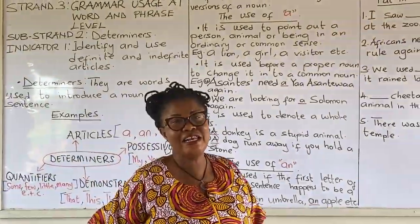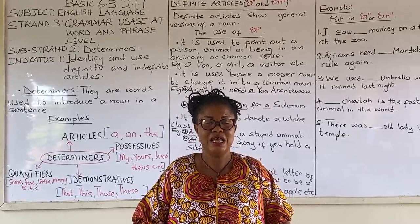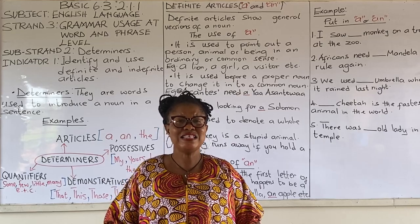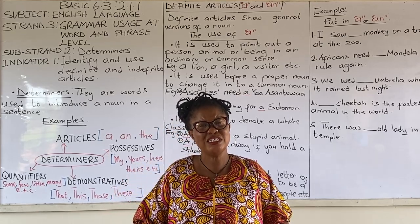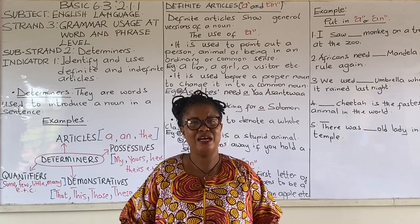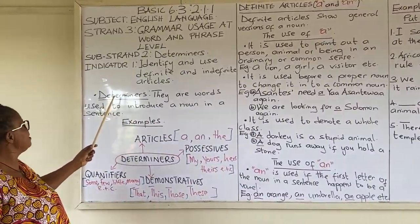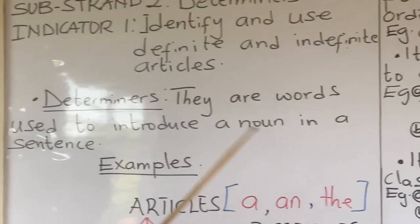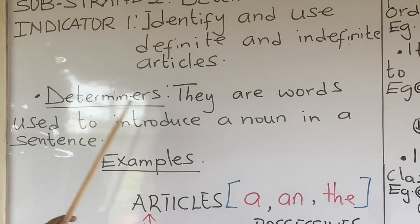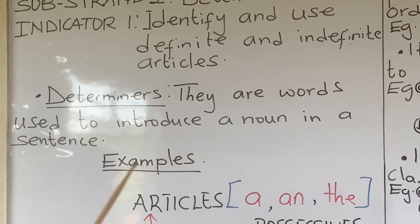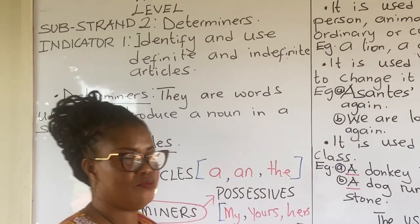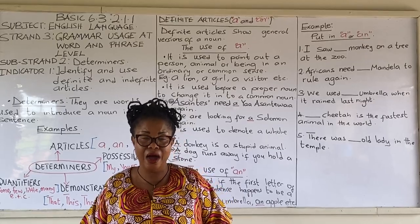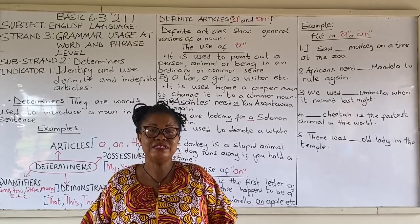Today's lesson is on determiners. And before we look at examples of determiners, let's ask ourselves: what is a determiner? Determiners are words used to introduce a noun in a sentence. Words are found in sentences, and before every noun there is a determiner.